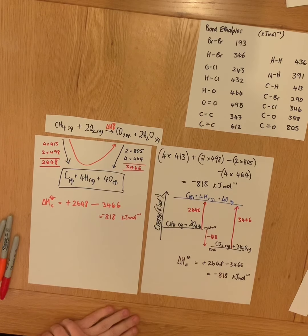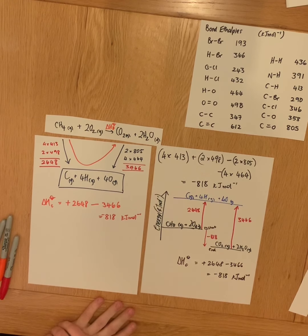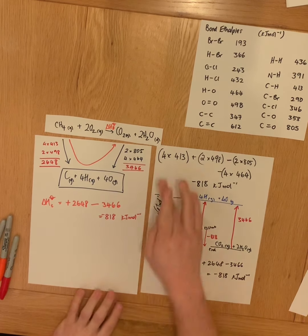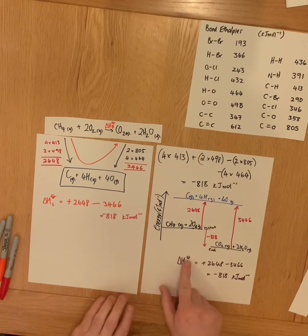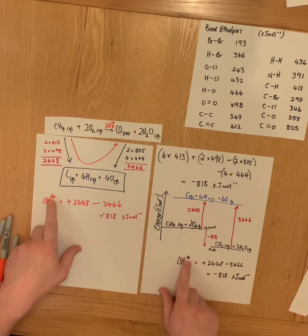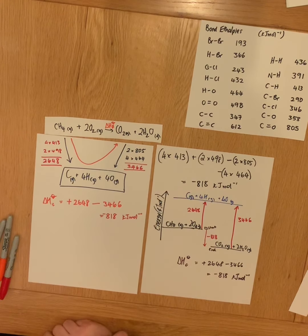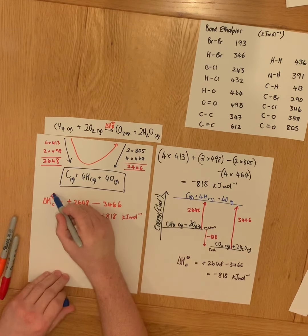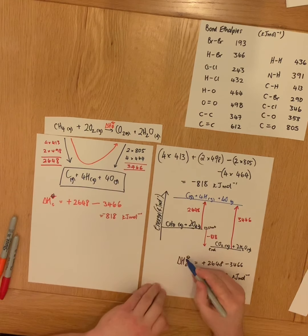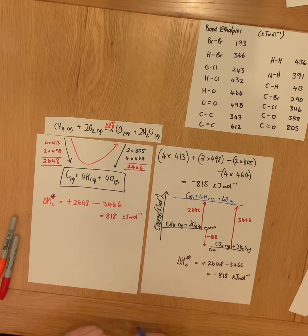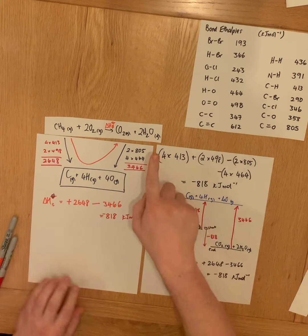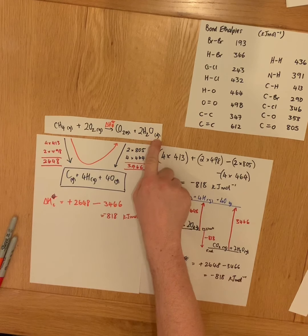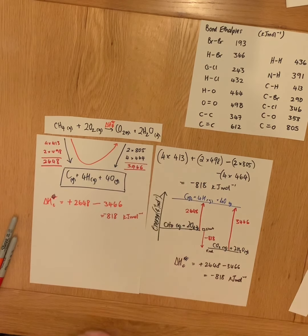We could also just look up in the data booklet the enthalpy of combustion. However, the enthalpy of combustion in the data booklet, and this little symbol here, isn't quite correct in what I have written. I have not actually calculated the standard enthalpy of combustion for methane. Because of this gas here, if this was the standard enthalpy of combustion of methane, water would have to be a liquid,